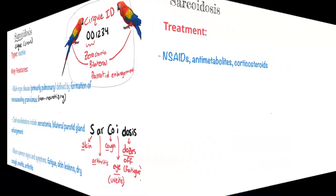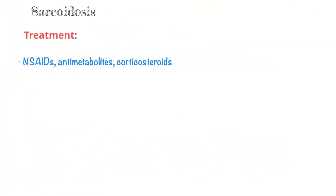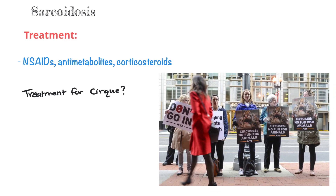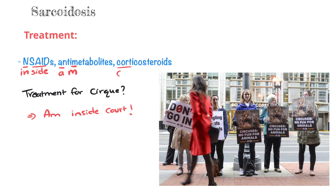For treatment of sarcoidosis, it's via NSAIDs, anti-metabolites, and corticosteroids. Imagine you're an animal activist wanting to treat the cruel condition of circuses — you'd be in court. 'I'm' stands for anti-metabolites, 'inside' is NSAIDs (reading it gives 'in-sides'), and 'court' is corticosteroids. So the treatment for sarcoidosis: I'm inside court.